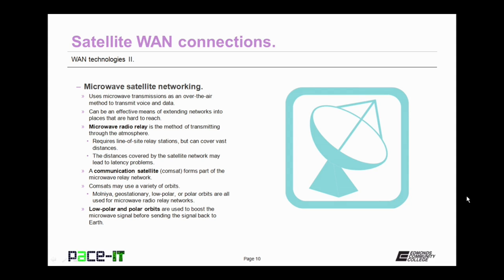Because of the distances that satellite transmissions can cover, this can lead to latency problems. The signal has to go from a terrestrial location up to the satellite, probably over to another satellite, and then down to another terrestrial station — a significant distance that results in lag. Communications satellites are also known as COMSATs, and they form part of the microwave relay network. COMSATs can use a variety of orbits, including the Molniya, geostationary, low-polar, or polar orbits. The low-polar and polar orbits are used to boost microwave signals before sending the signal back to Earth.